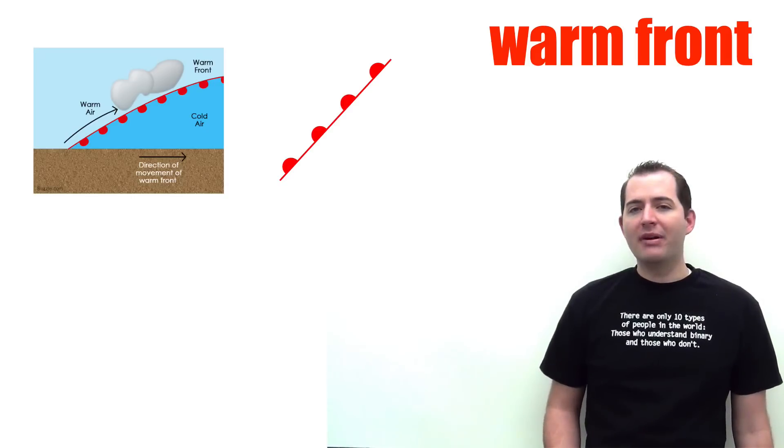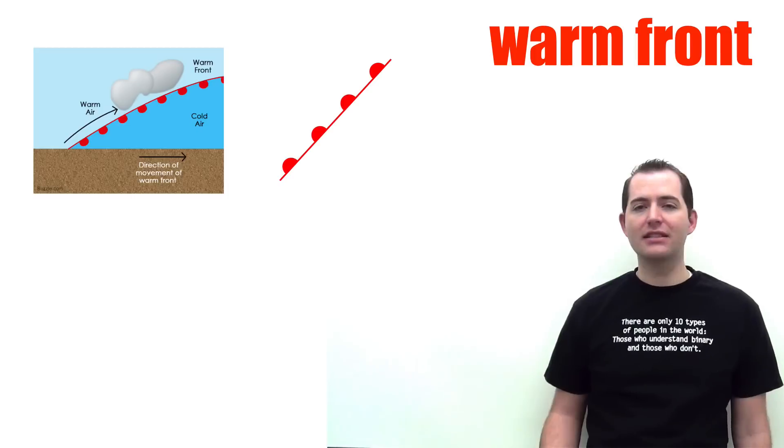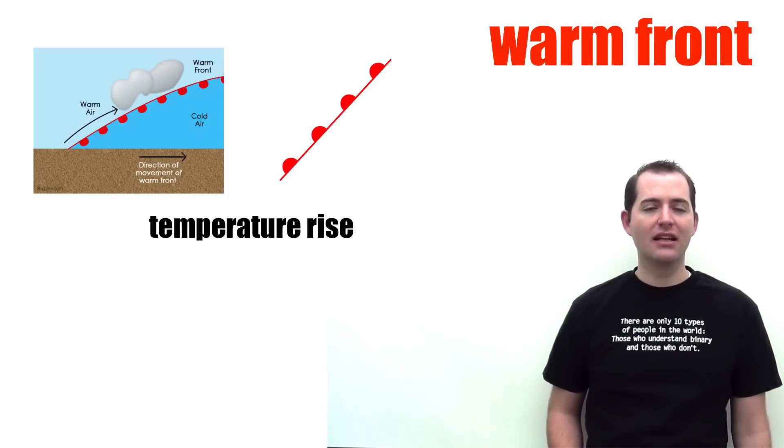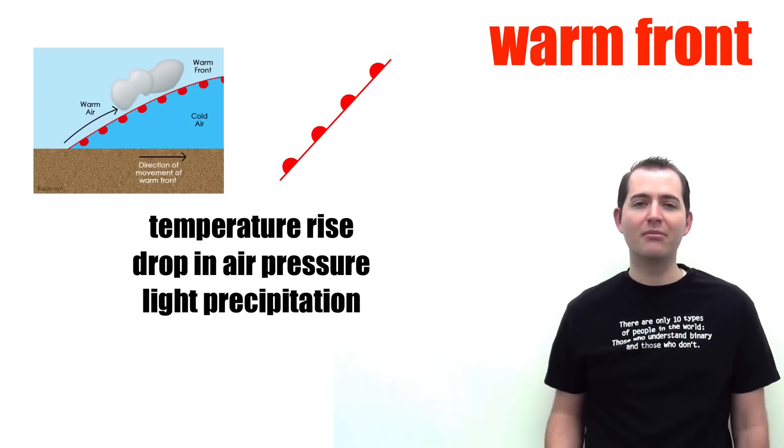When a warm front passes over an area, there are a few predictable weather changes. The temperature will usually rise, and there will typically be a drop in air pressure. Because of the slow gradual rising of this air, they can bring rain as well, but it's typically much lighter than that found at a cold front.